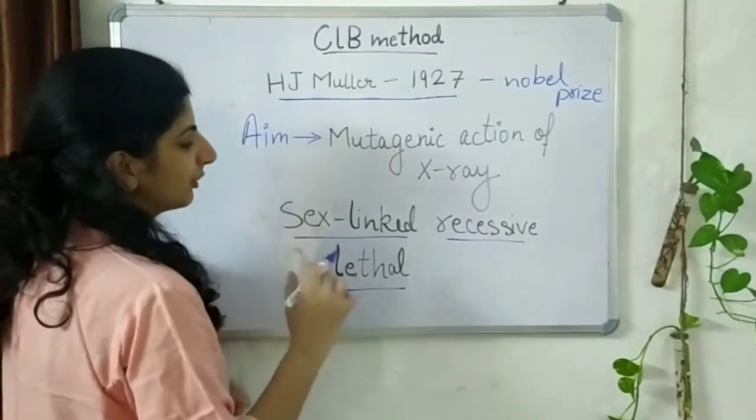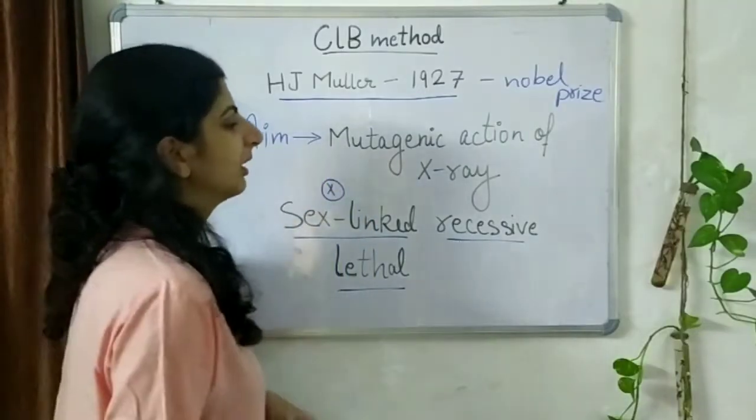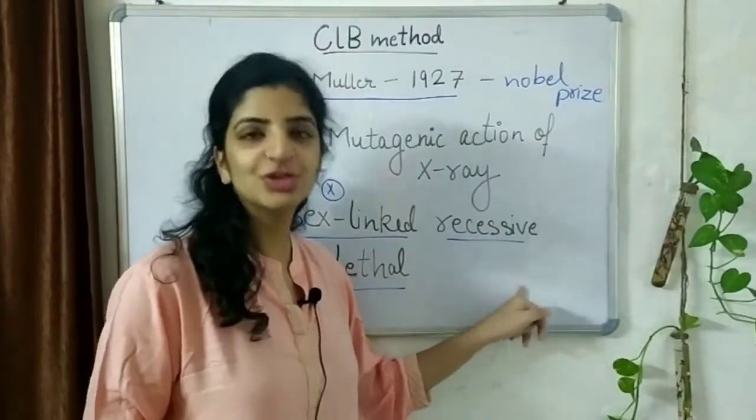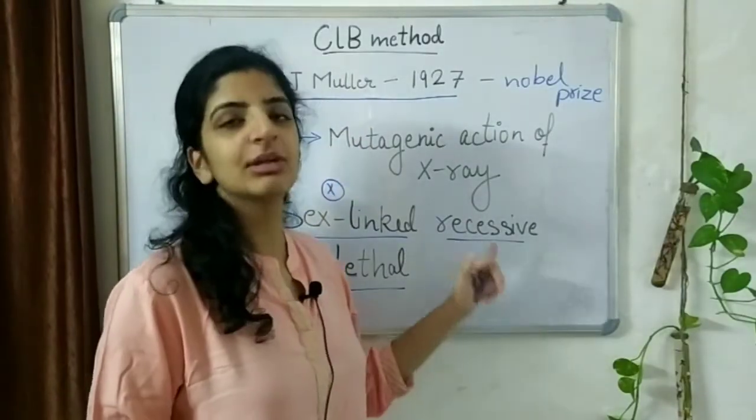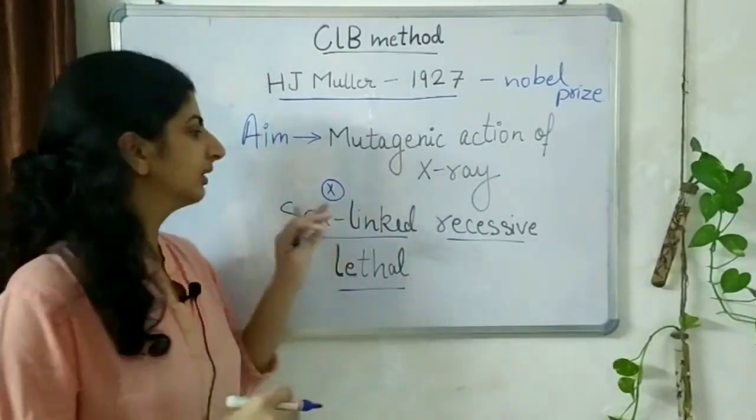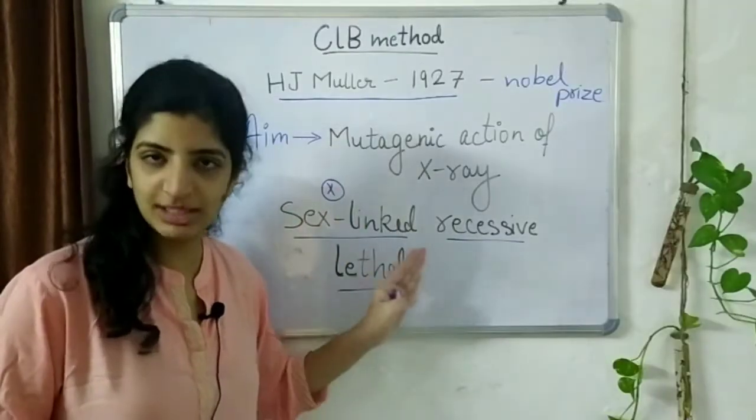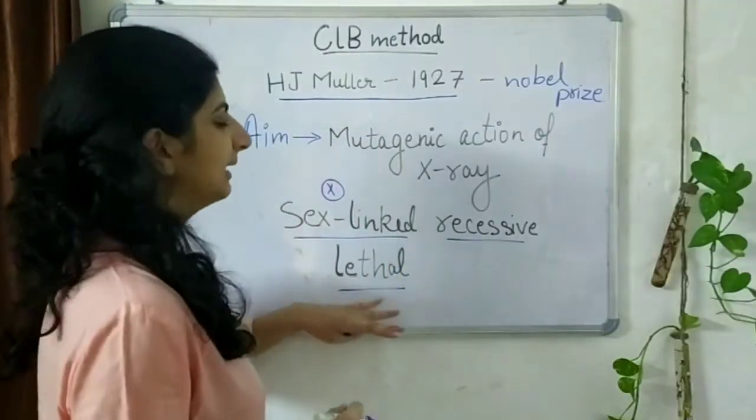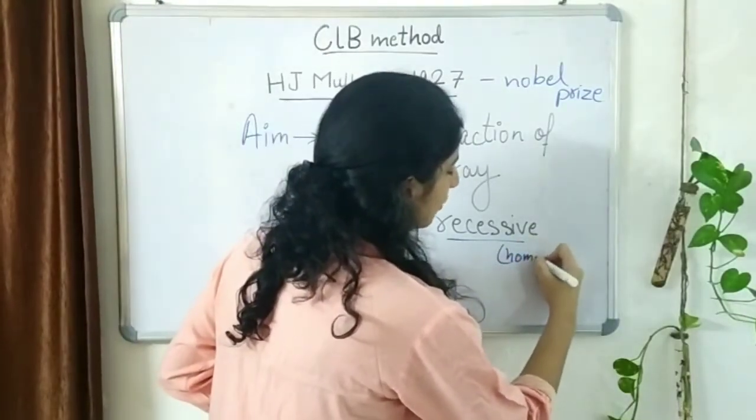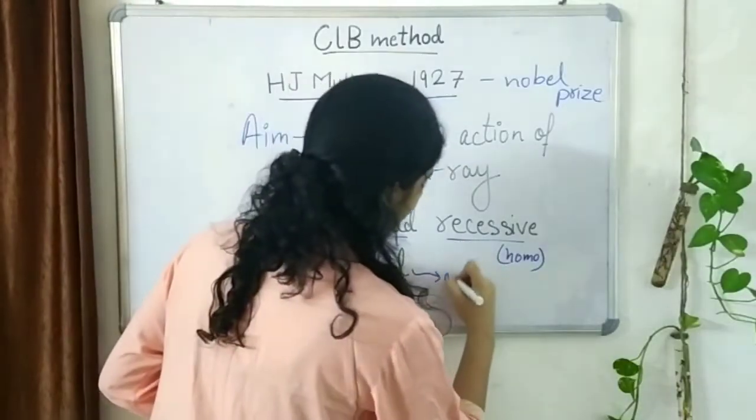The sex-linked mutation means that it has something to do with the X chromosome. Recessive means that it has to be present in a homozygous condition. Only then it will be able to express itself. That means in heterozygous condition, this mutation will not be able to express. And lethal means that if it actually is present in the homozygous condition, the organism will die.